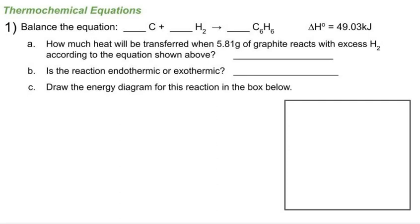In this video we're looking at the thermochemical equations practice sheet. For each problem we use stoichiometry to answer the question. First, with any thermochemical equation, if it's not balanced we need to balance it. Here we have an unbalanced equation, so I'm going to balance hydrogen by putting a 3 in front of H₂, and then balance carbon by putting a 6 in front of carbon.